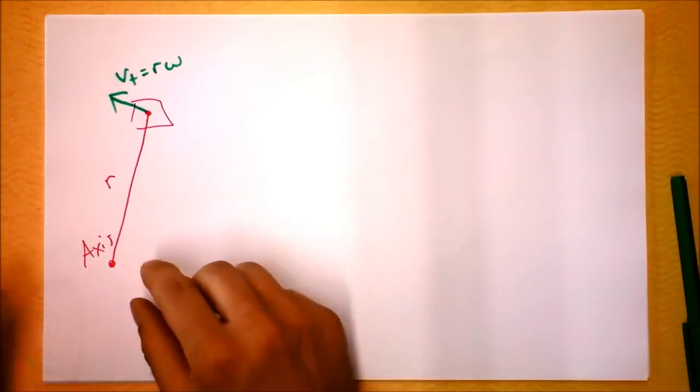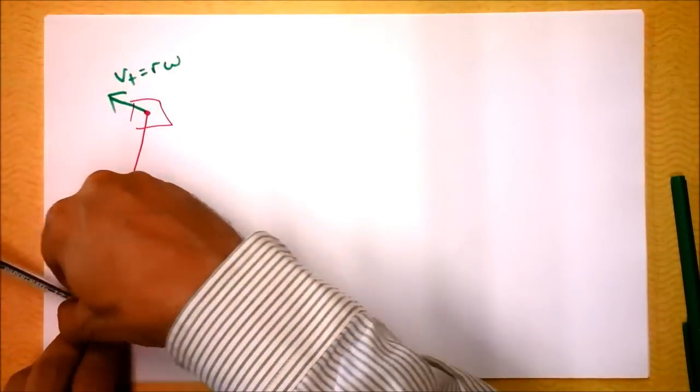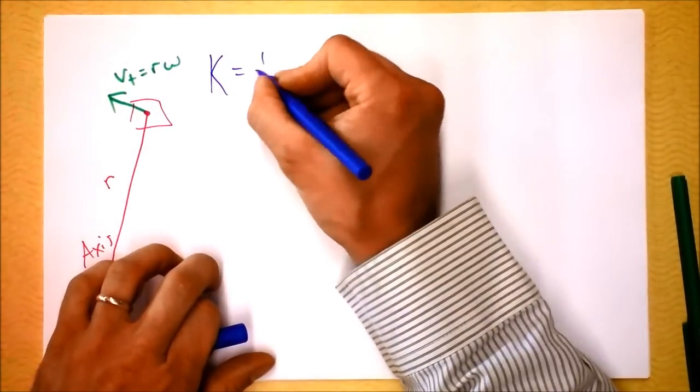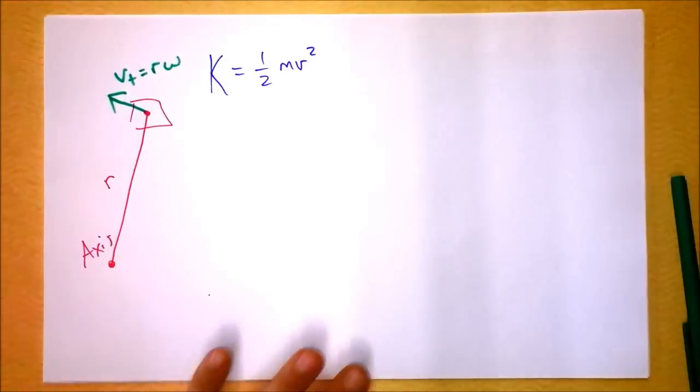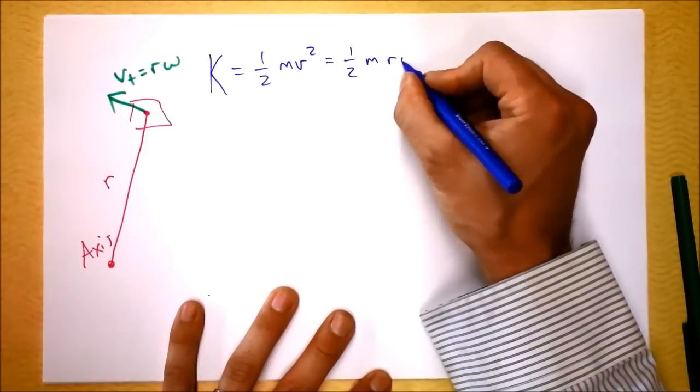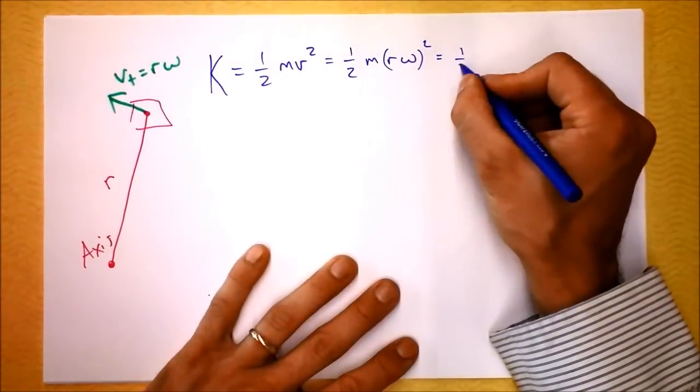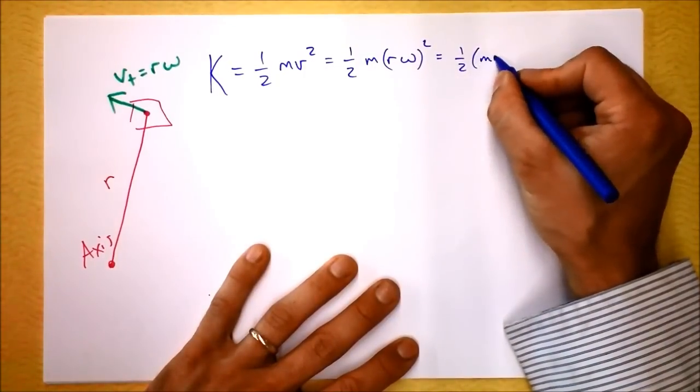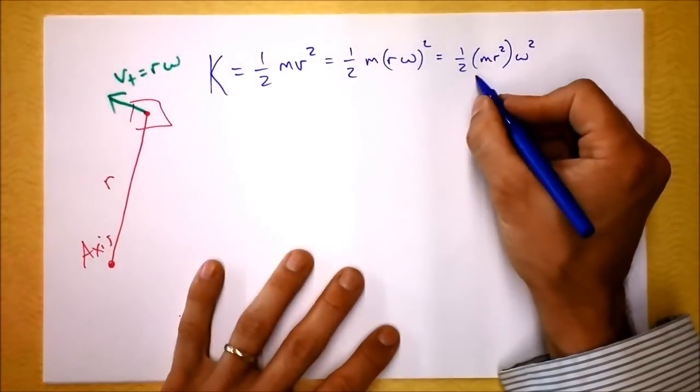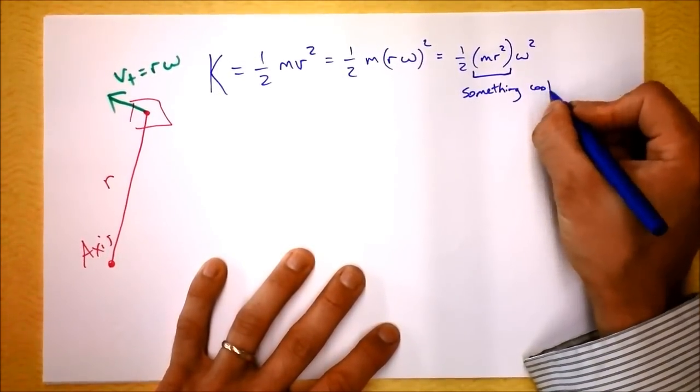Now I want to think about what the kinetic energy of this system is. What is the kinetic energy of this system? We know that kinetic energy is one-half mV squared. And we can plug in what V is because we know that it's R times omega, and that's going to be one-half m times r omega squared. And if we spread this out a little bit more, we can say that it's one-half mR squared times omega squared. And the reason I'm doing this is I'm going to identify this thing as something cool. Here we go. Something cool.